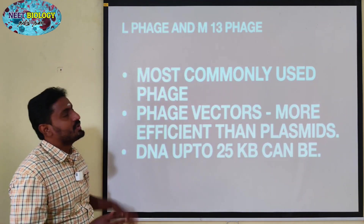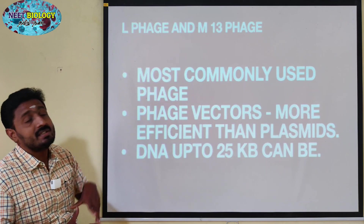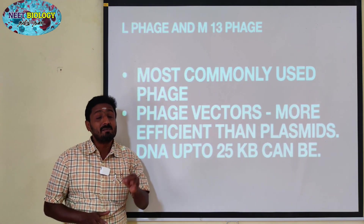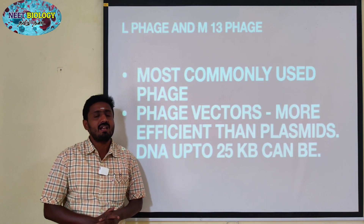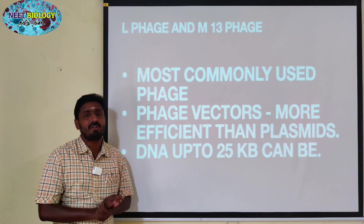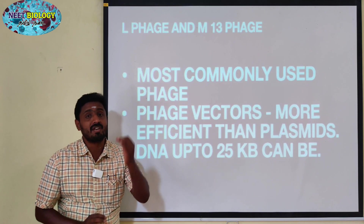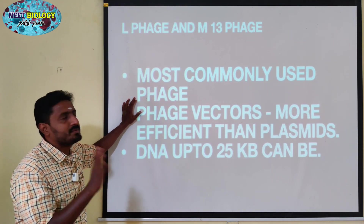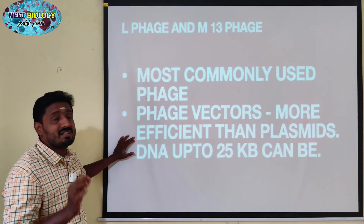The most commonly used phages are L-phage and M13-phage. M13 and Lambda are types of bacteriophage. Bacteriophage has two main types. They are very important in recombinant DNA technology because they are used as vectors. Most commonly used phage vectors are more efficient than plasmids.